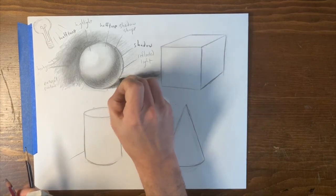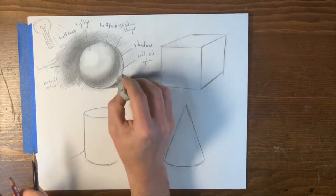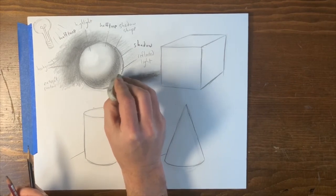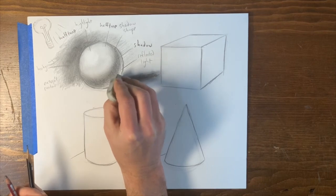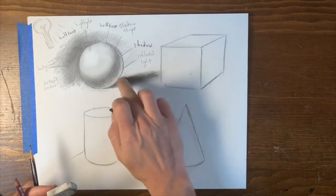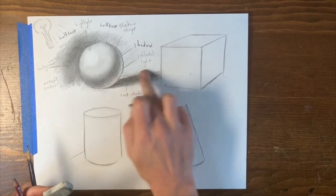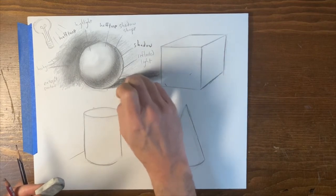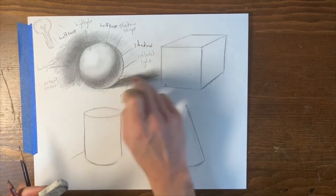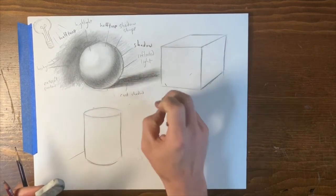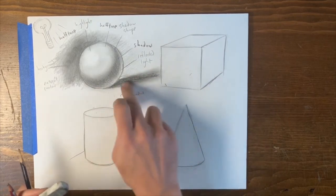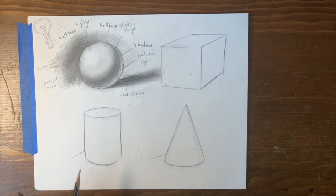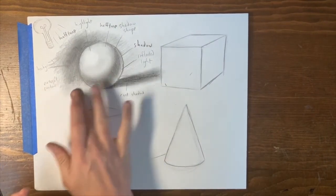So, that cast shadow, I'll get my precise eraser out, can get really precise, if you want it to, at the source. It can be really sharp. But then as it goes away, it gets much, much softer. Again, these are general rules, but there are exceptions to all of these things. So, don't feel that in every light condition, indoors, outdoors, that this has to be followed. But just understand that that's a general idea in nature.